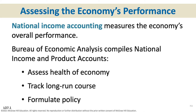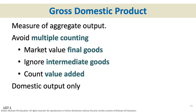GDP also lets us compare from one country to another. Gross domestic product is a monetary measure — it's measured in terms of money — of all the final goods and services produced within the nation over a given time period. We're making an attempt to include the monetary value of everything produced in the nation, and we only want to count things one time to avoid multiple counting.